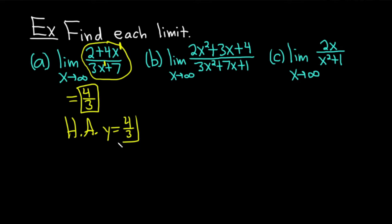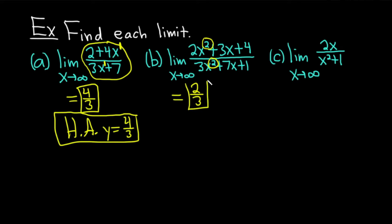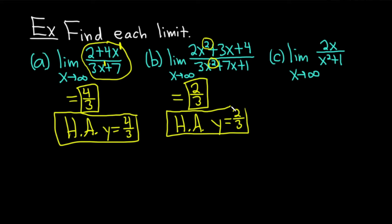In part b, we have the limit as x approaches infinity of (2x² + 3x + 4) / (3x² + 7x + 1). The degree is 2 in both numerator and denominator — they match. So the limit is the ratio of the leading coefficients: 2 over 3. Whenever you take a limit to infinity or negative infinity and get an answer, that's your horizontal asymptote. So the HA is y equals 2/3. It's important to include the y equals because a horizontal asymptote is a horizontal line.